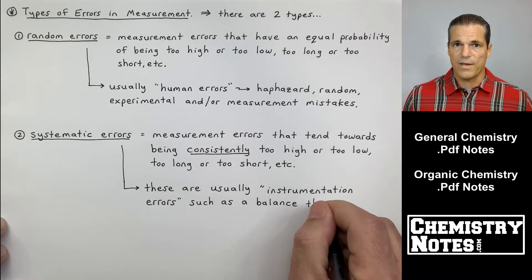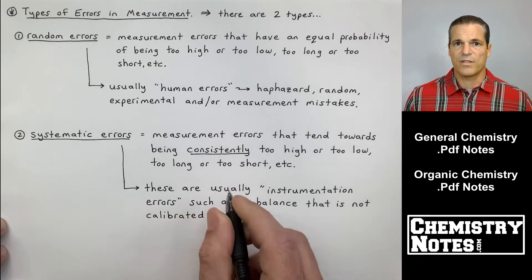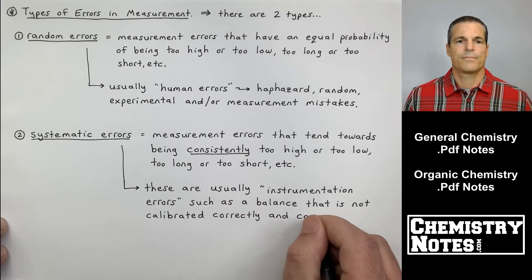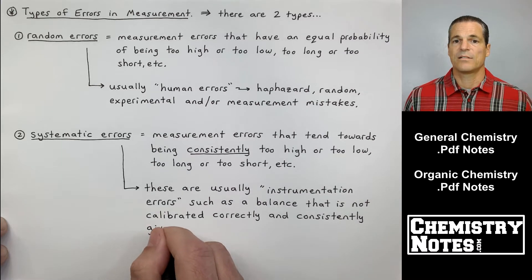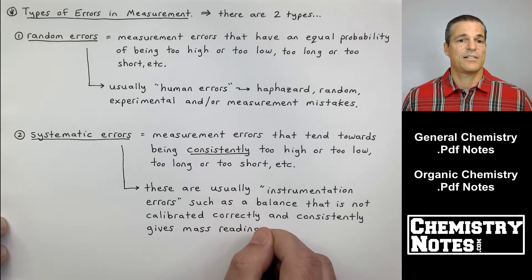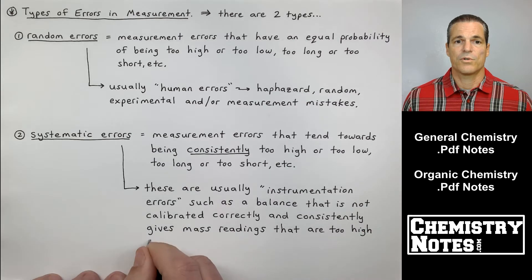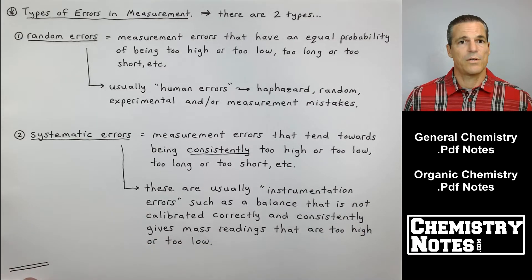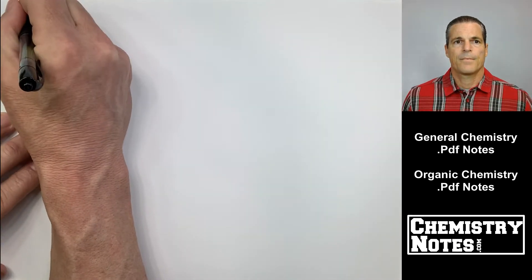So we have two synonyms here. Number 1, random errors is like human error. Systematic errors is kind of synonymous with instrumentation errors, equipment errors, glassware errors. These are usually instrumentation errors, such as a balance that is not calibrated correctly and consistently is giving mass readings that are too high or too low. But it's usually only one way or the other, not both.